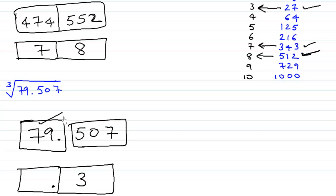Where does 79 come? 79 comes in between 64 and 125. Which is the smaller number? 64 is smaller. What is written opposite to that? 4 is written opposite to that. So the answer to this shall be 4.3.